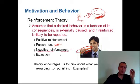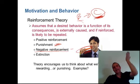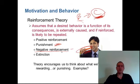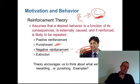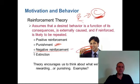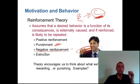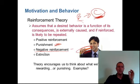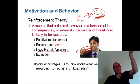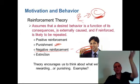Negative reinforcement is pulling away a negative stimulus when the correct behavior occurs. Please note this — I've heard business people time and time again get this wrong. For example, someone is late on a project. The boss keeps calling and calling until finally the person does the project, and then the boss pulls away that negative stimulus — the call. Pulling away a bad thing when the correct behavior occurs.